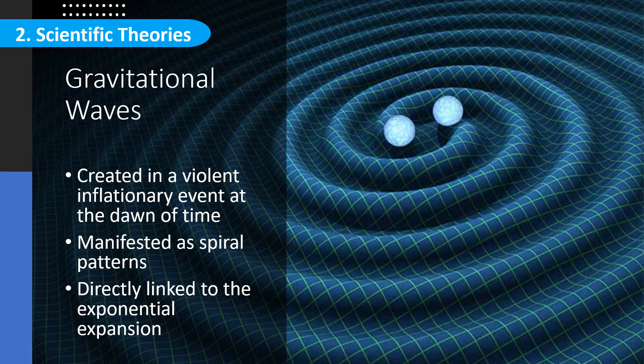These gravitational waves were supposedly created in a violent inflationary event at the dawn of time. The ripples manifested themselves as faint spiral patterns in the cosmic microwave radiation. According to Kovac, the existence of gravitational waves is directly linked to the exponential expansion that is intrinsic to the inflation theory.